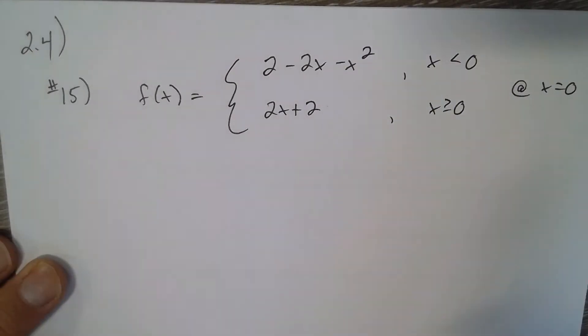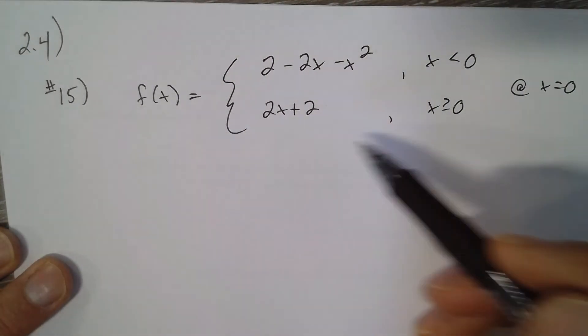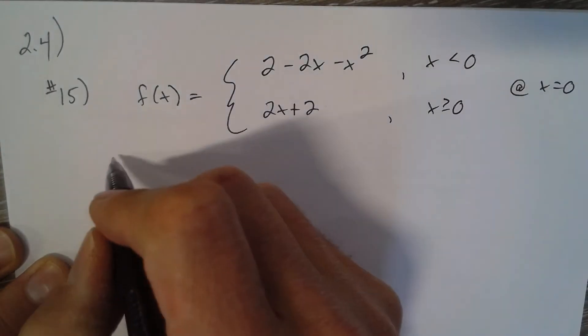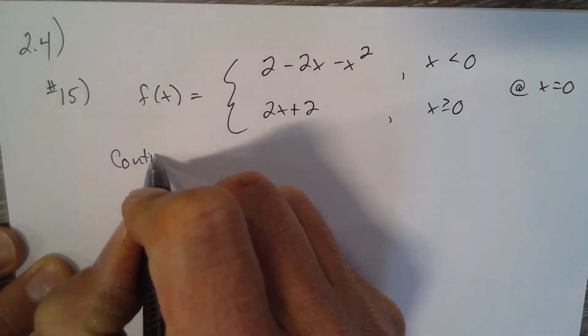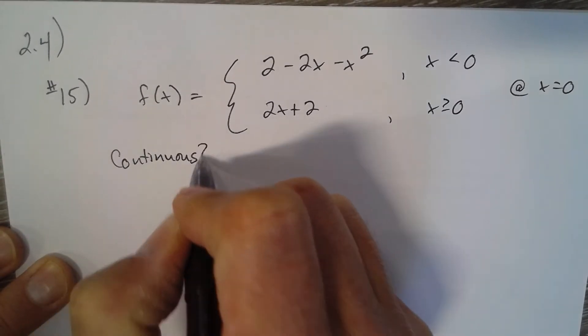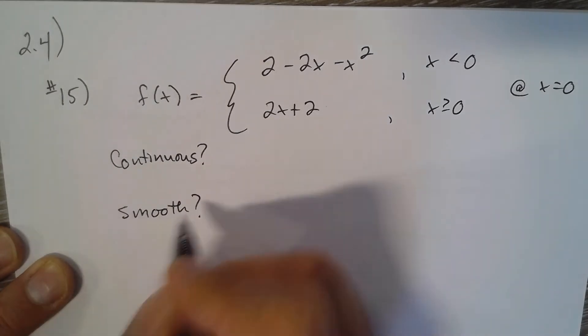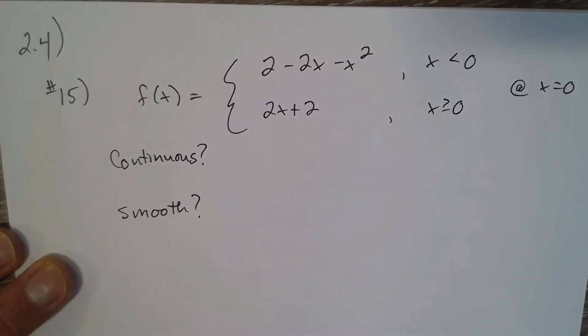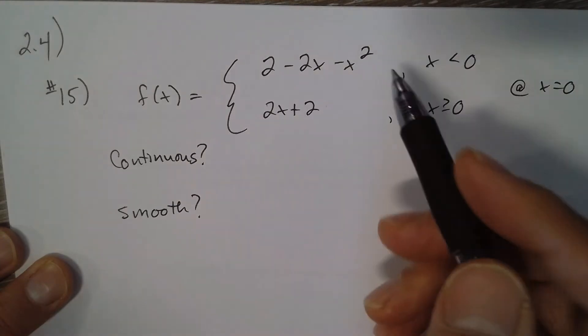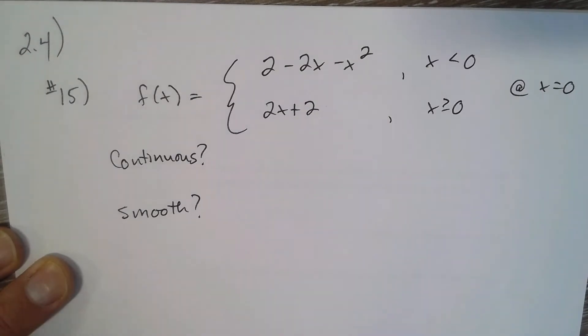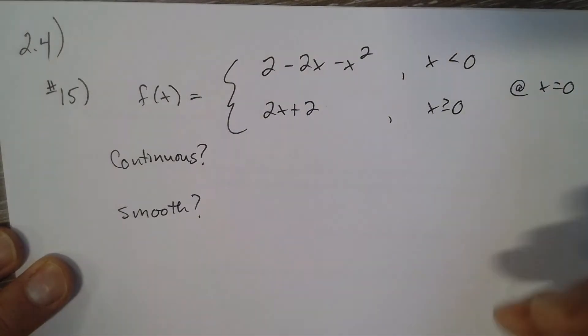Two criteria for a function to have a tangent at the piecewise: It's got to be continuous, and it must be smooth, have local linearity. Basically, the slope of this piece must be the same as the slope of that piece.